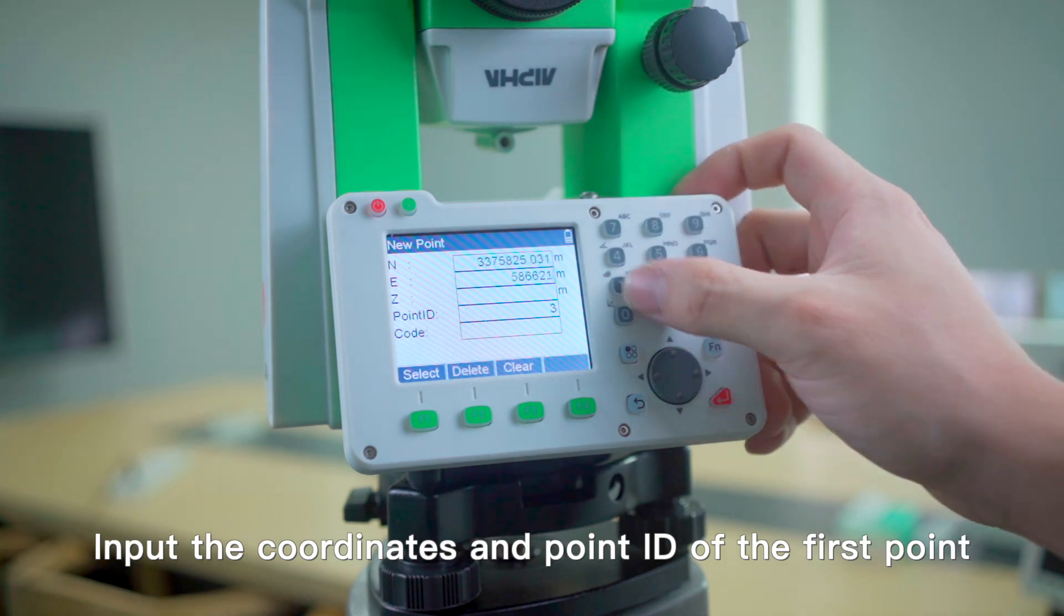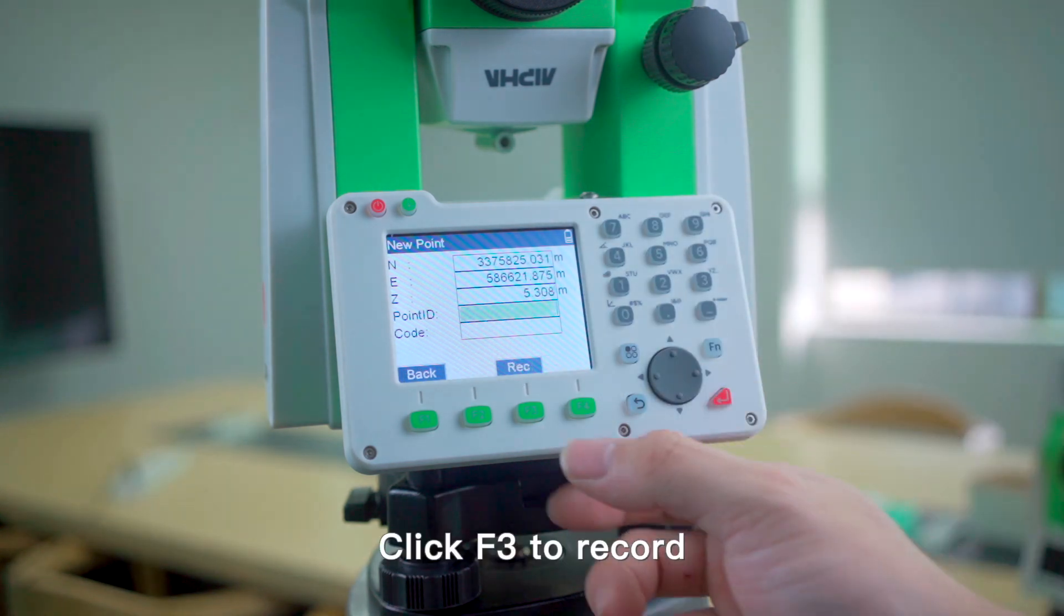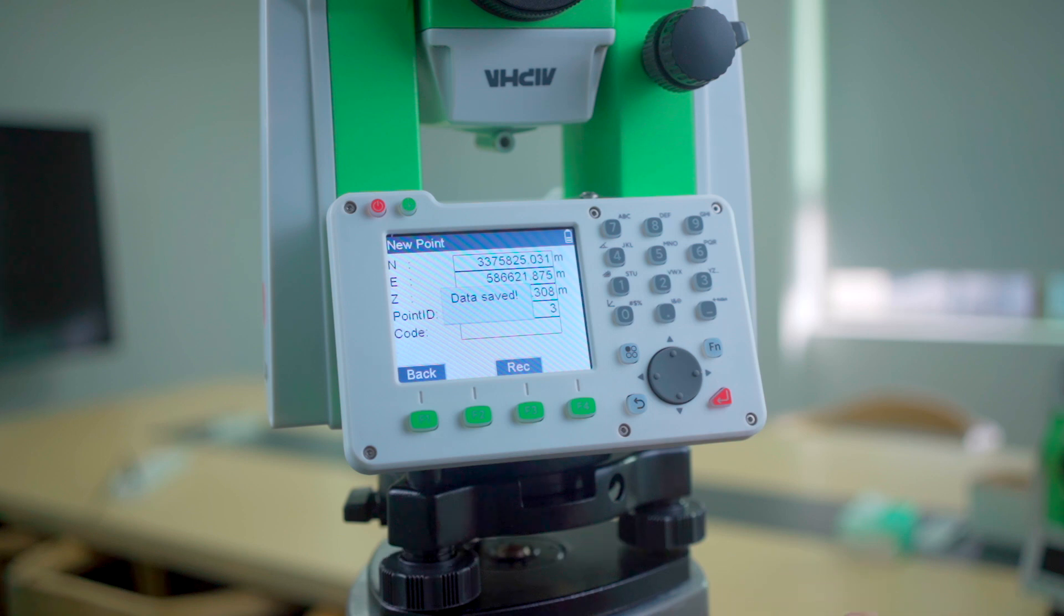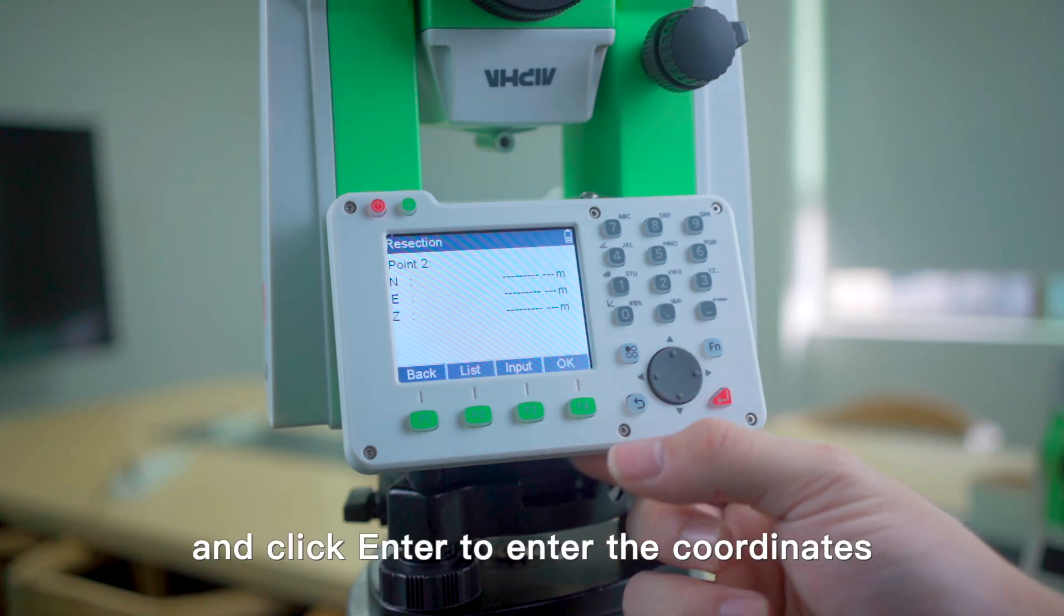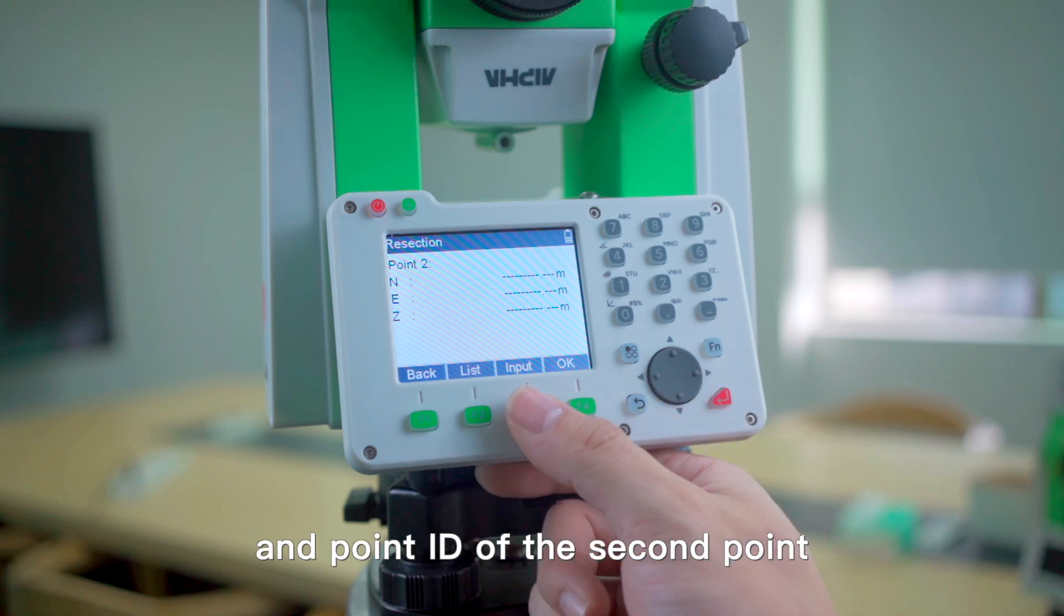Input the coordinates and point ID of the first point. Click F3 to Record and click Enter to enter the coordinates and point ID of the second point.